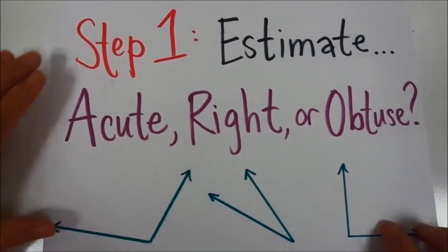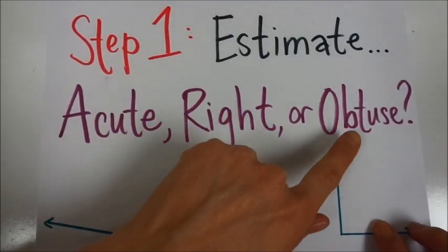Step one for reading a protractor is to estimate, is your angle acute, right, or obtuse?